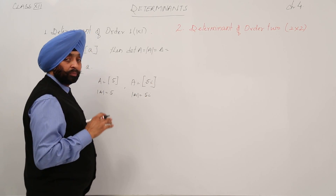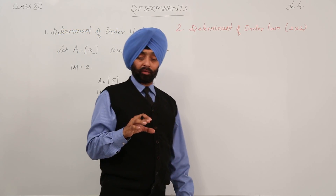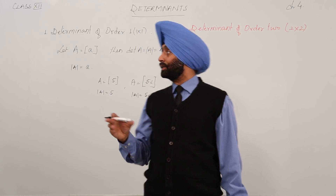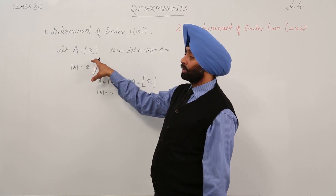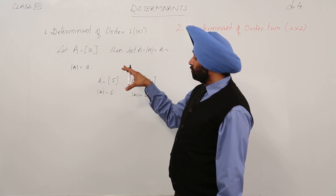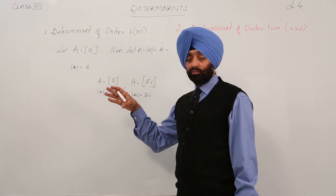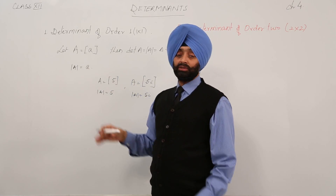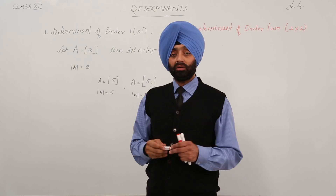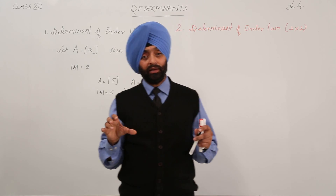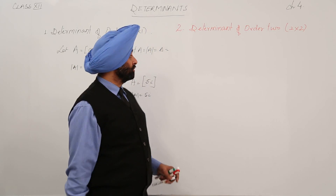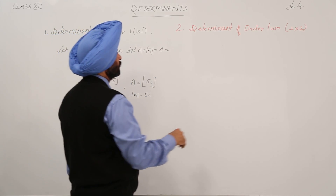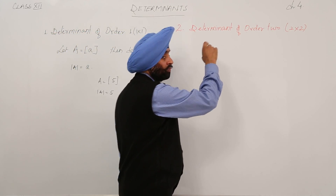So to summarize: for a 1×1 matrix where A contains only one single element a, the determinant of capital A is equal to small a — the value of that element. That is the determinant for order 1×1. Now let's move to the determinant of order 2×2.